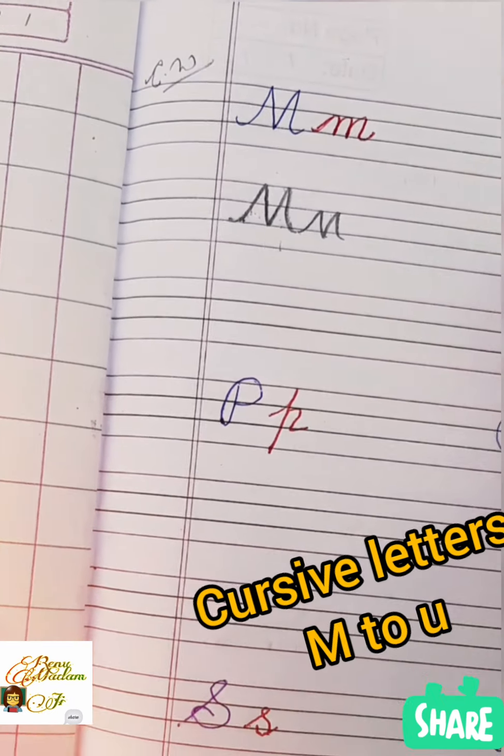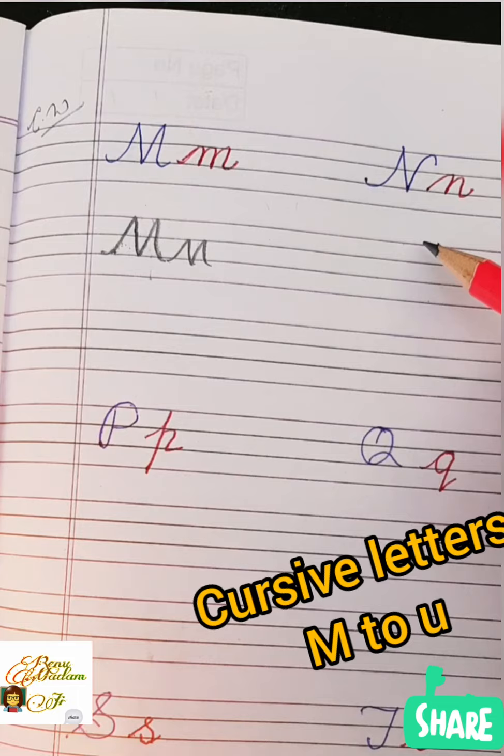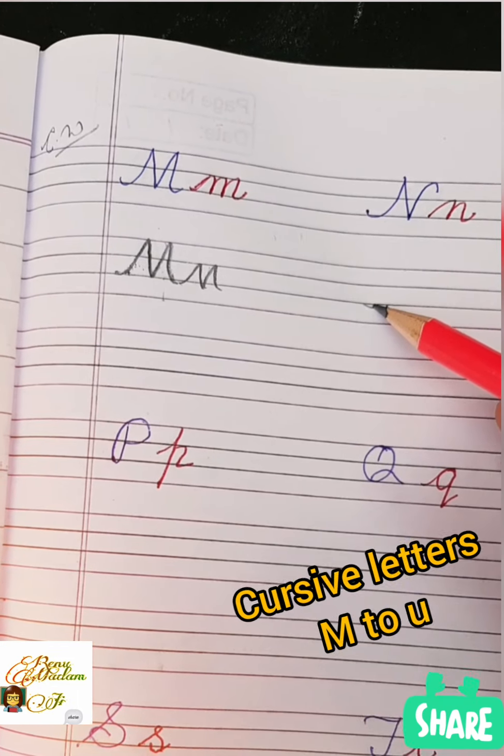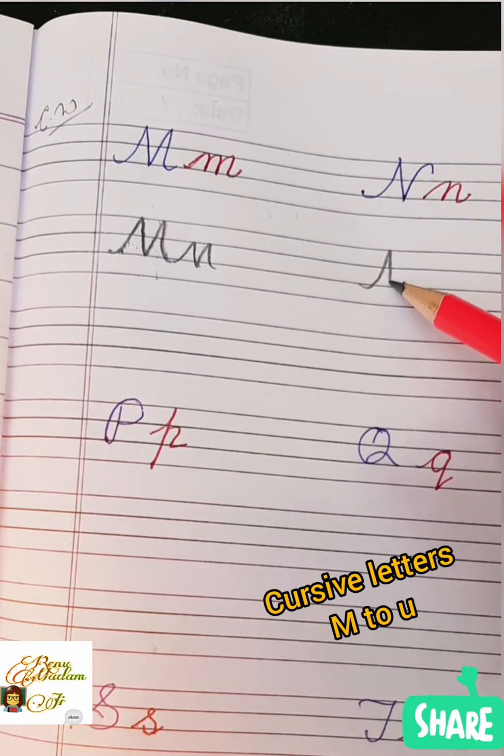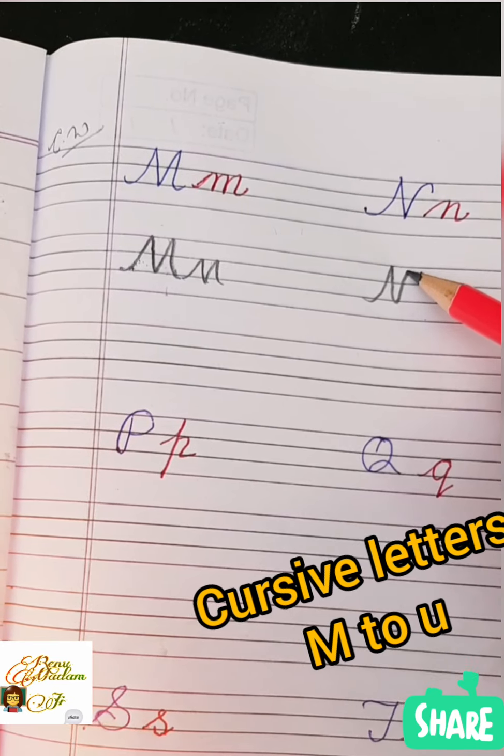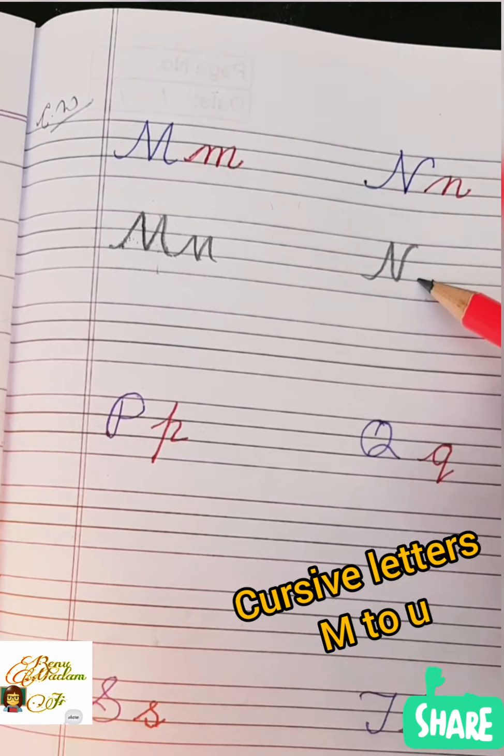What is this? Tell me cursive M. And do the process same: up, down, up. This is our small M, which we will write between two lines.